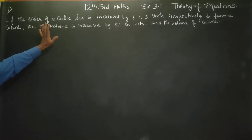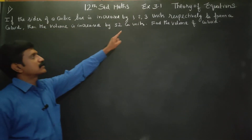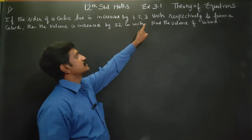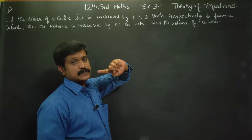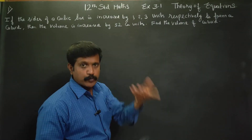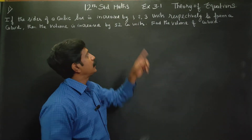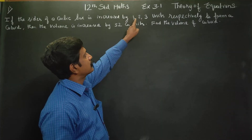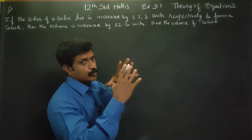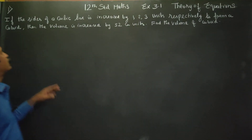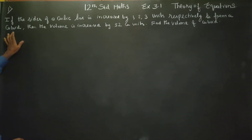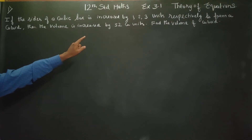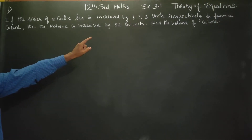Actually, a cube box has equal sides — length, breadth, and height are all equal, so it's x cubed. To form a cuboid, the volume is increased by 52 cubic units. Find the volume of the cuboid.